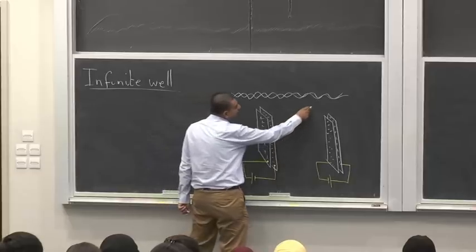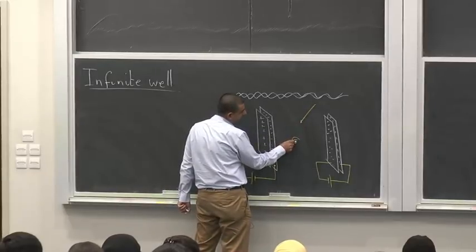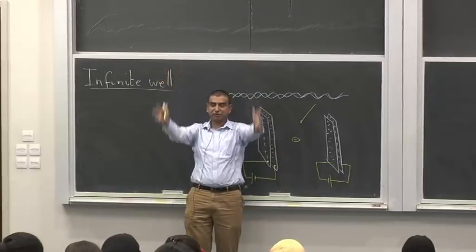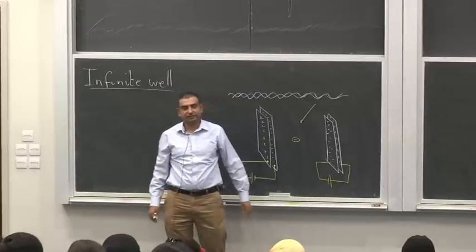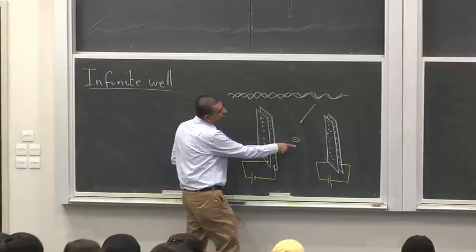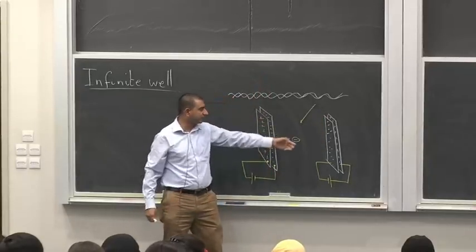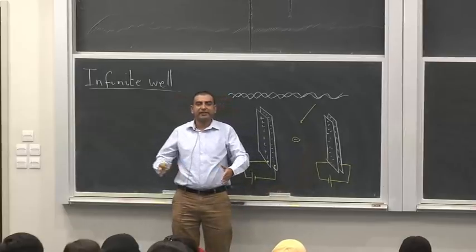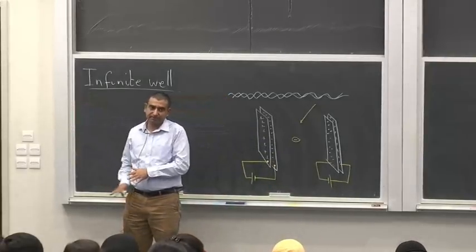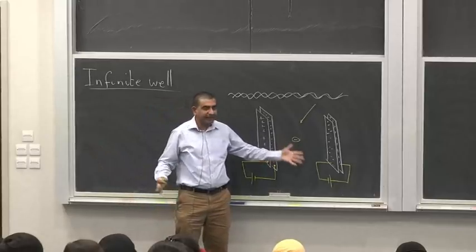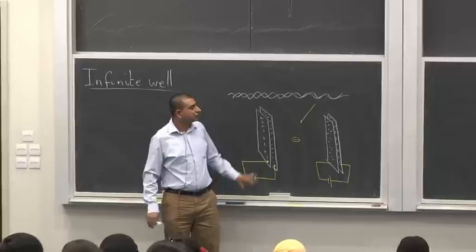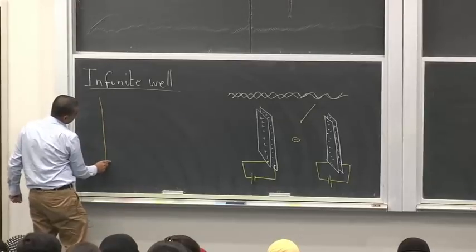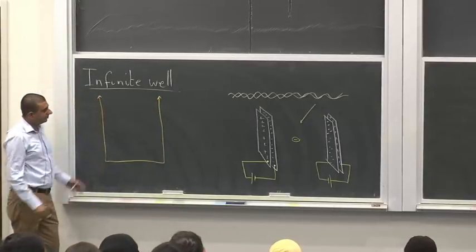We have a region in between these plates where there's a negatively charged plate on the left and a negatively charged plate on the right of this region. Suppose we somehow inject an electron into this region. Inside this region, if these plates are really large, the potential will be constant. The electron will encounter a hard brick wall because it's repelled by the negatively charged plates on both sides. This is one possible physical realization of an infinite well, which has a potential landscape where at certain edges the potential approaches infinity.